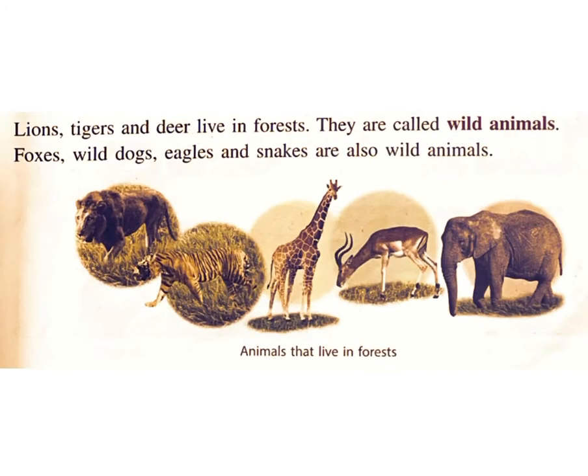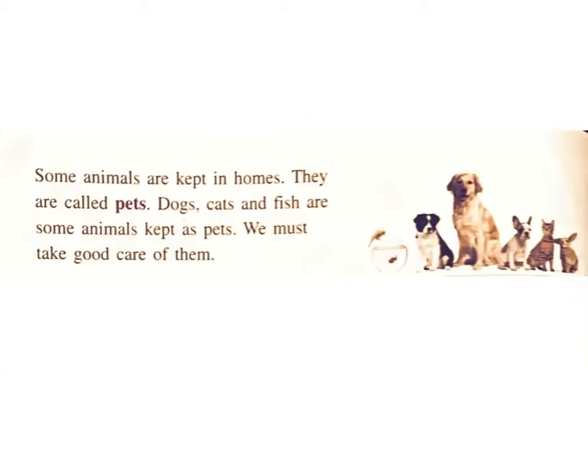Lions, tigers, and deer live in forests. They are called wild animals. Foxes, wild dogs, eagles, and snakes are also wild animals. Some animals are kept in homes. They are called pets. Dogs, cats, and fish are some animals kept as pets. We must take good care of them.